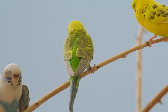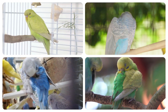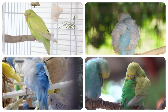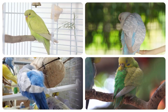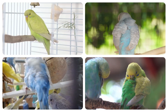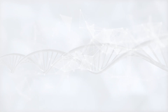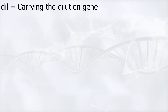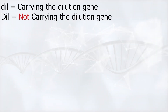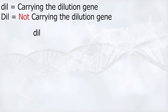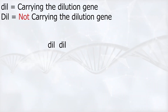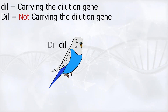Now you might still be wondering: how can one single gene create four such different mutations? That's where the real magic begins. In the next part, we're going to dive into the genetics behind the dilution gene, and once you see how it works, everything we've just covered will make perfect sense. The dilution gene is a recessive gene. That means we write the recessive form as 'dil' with a small d. The dominant form — the normal type — is written as 'Dil' with a capital D. So in order to actually see a dilute budgie, the bird needs two copies of the recessive form: one dil from the mother and one dil from the father. If it only has one copy, the dominant capital Dil takes over and the bird looks normal.